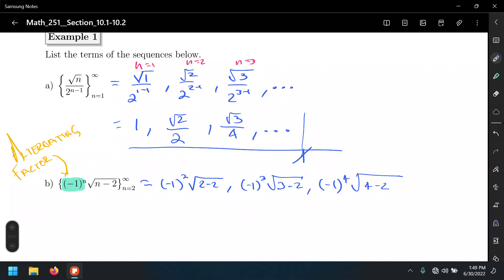2 minus 2 inside of the radical, that's 0. Square root of 0 is 0. Negative 1 to the 2nd is positive. Well, that doesn't matter. It's going to be 0. The square root of 3 minus 2, that's 1. The square root of 1 is 1. But this negative 1 to the 3rd power, because it's an odd power, it's going to make this negative 1. And the next one, the square root of 4 minus 2, 4 minus 2 equals 2. That's the square root of 2. But because negative 1 to the 4th power, in this case, it's going to turn it into positive.